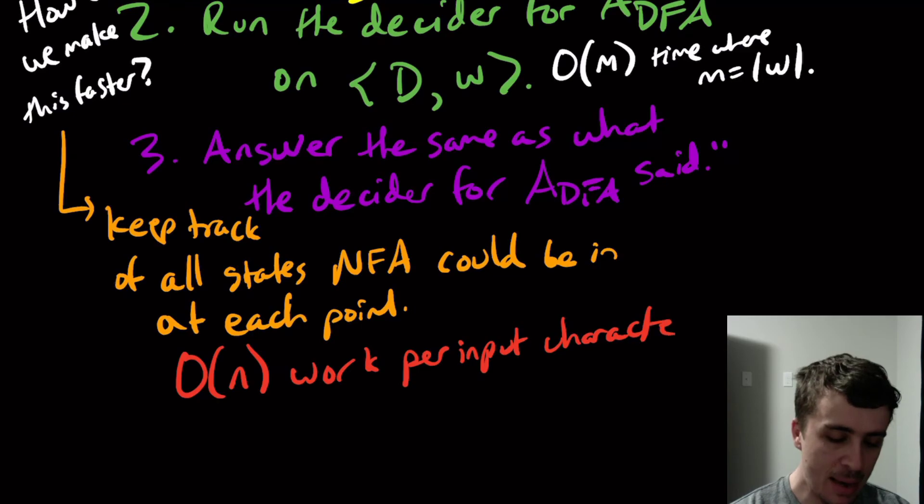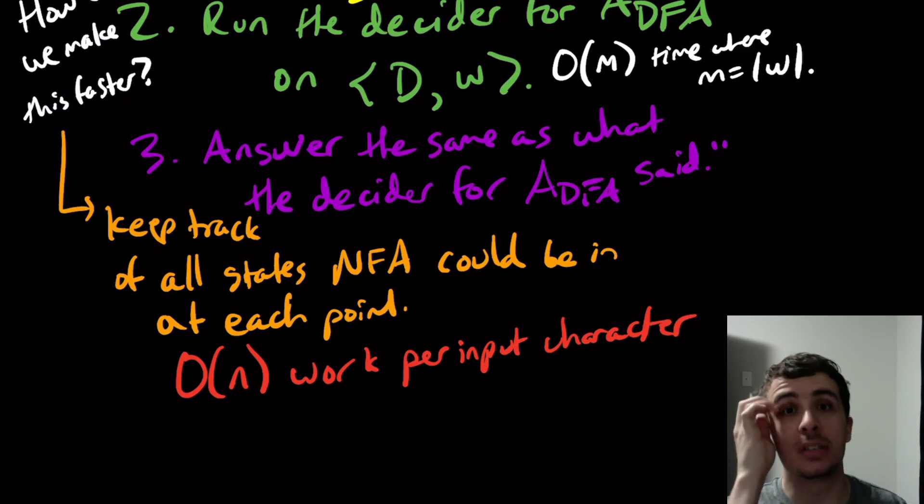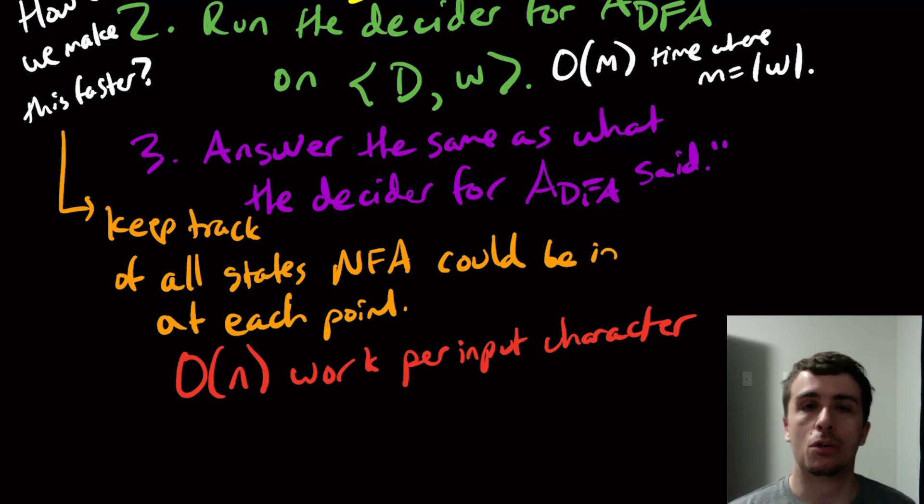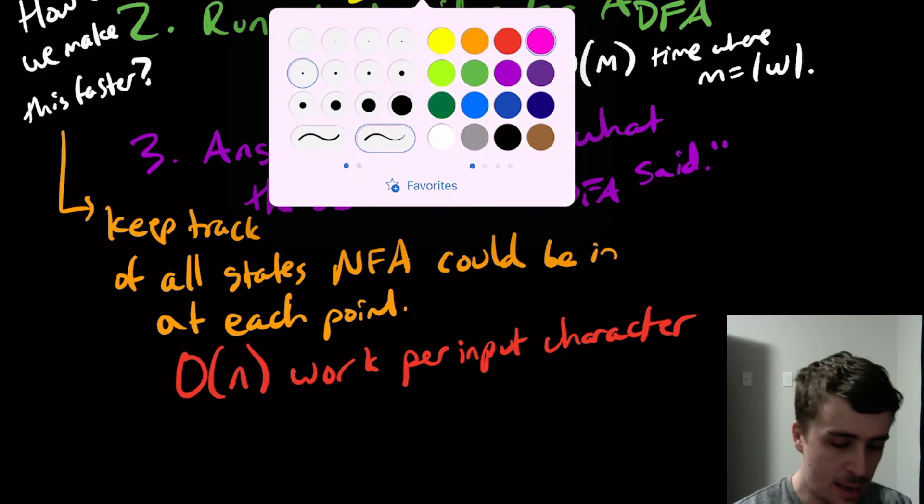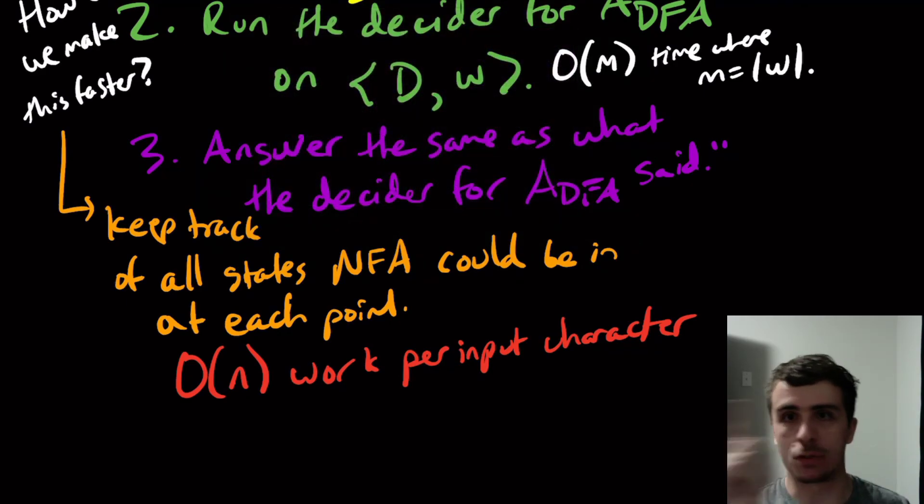So it's going to be O(n) work per input character. And why is that? Because I may possibly have to write down all of the states at a given moment. That's entirely possible. So where n here is the number of states, by the way. So I might need to write down all of those, but that's all I need to do. I may have to scan across the state several times. So it is a constant amount of work, but it's still a constant.